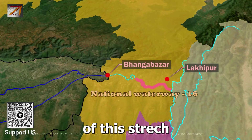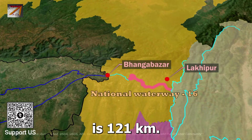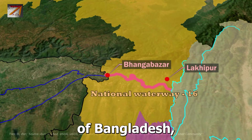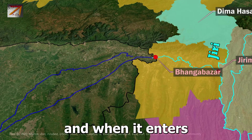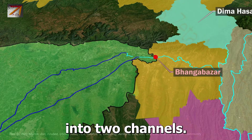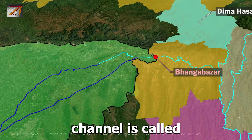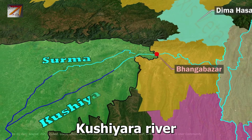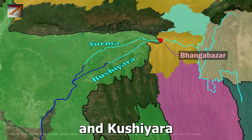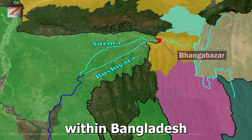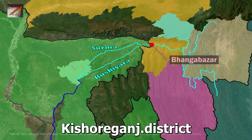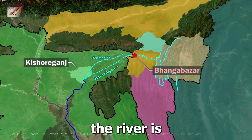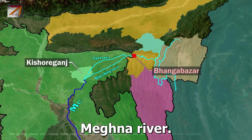Bhanga is located right on the border of Bangladesh. When the Barak River enters Bangladesh, it bifurcates into two channels: the northern channel called Surma River and the southern called Kushiyara River. The Surma and Kushiyara flow within Bangladesh and rejoin in Kishoreganj district above Bhairab Bazar. There the river is known as Meghna River.